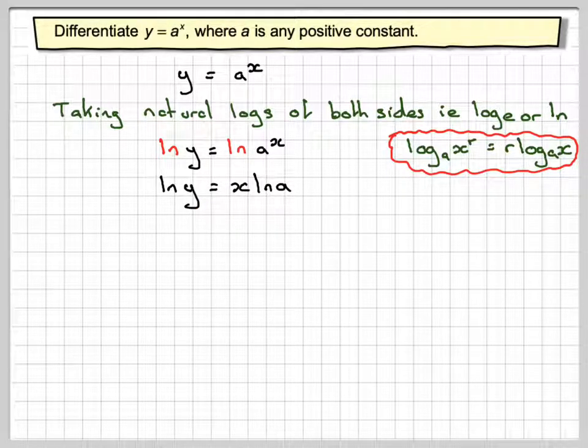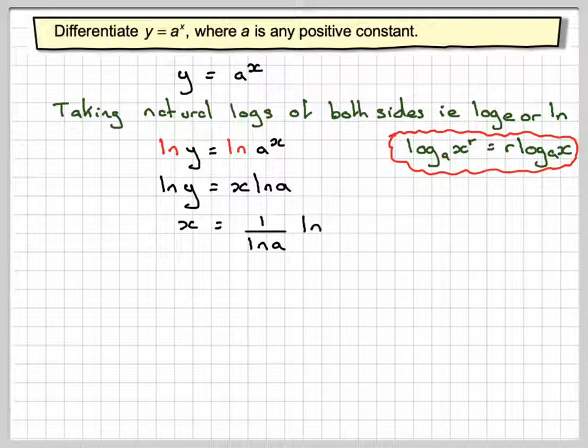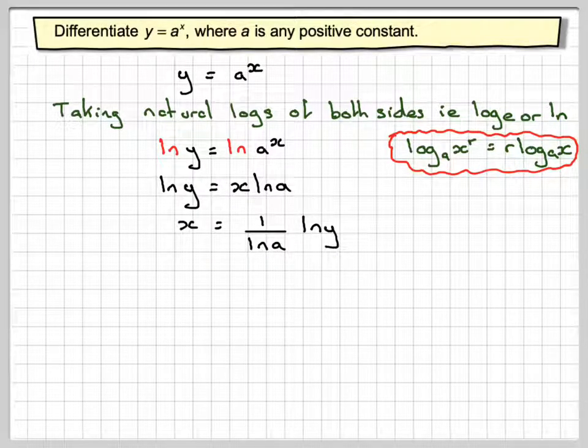Now if we rearrange this, we can rearrange it to say that x is 1 over ln of a times ln of y. Just pause the video there if you're not certain about that.